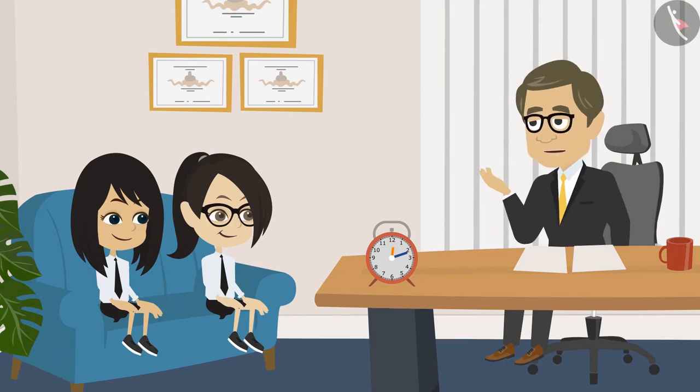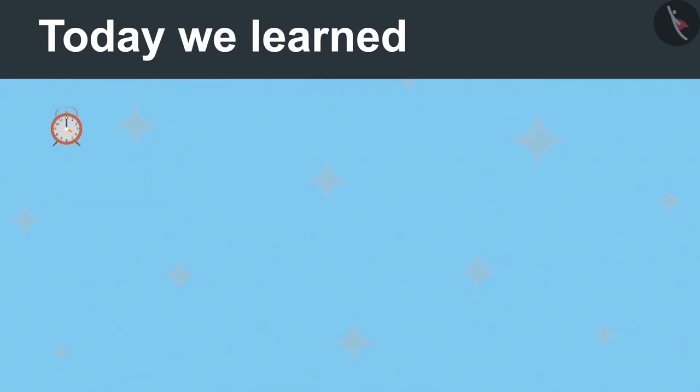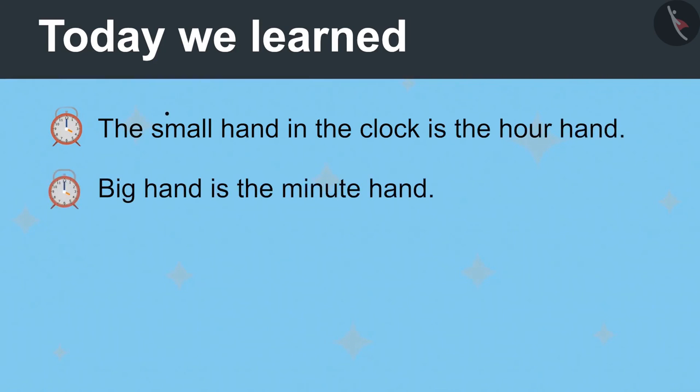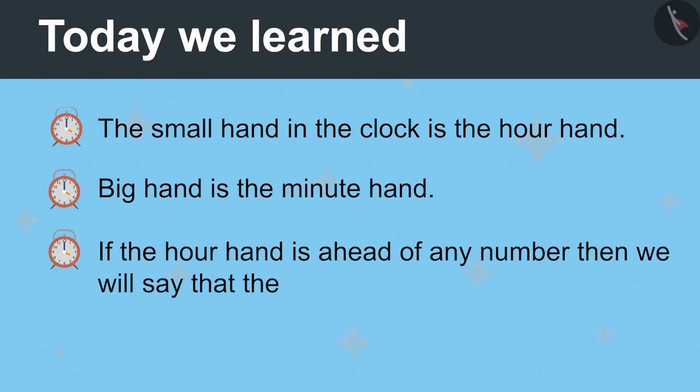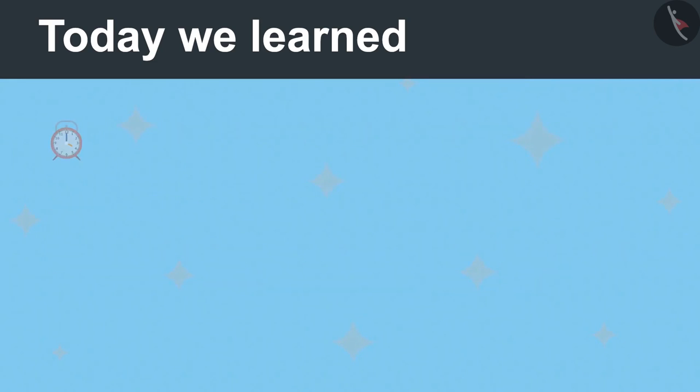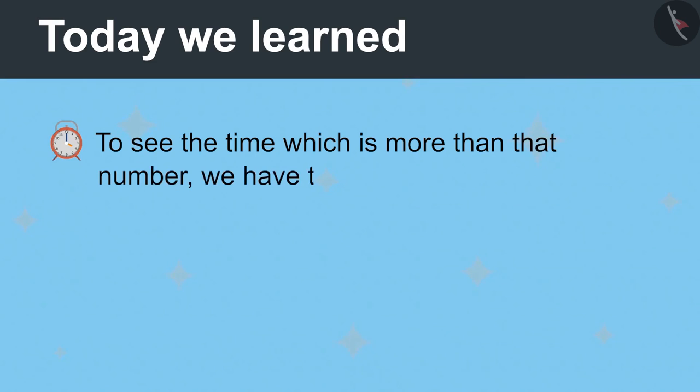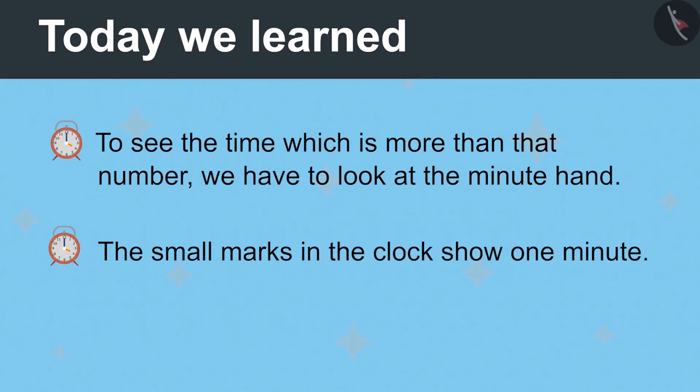Tell me once, what have you learned today? Sir, we learned that the small hand in the clock is the hour hand and the big hand is the minute hand. If the hour hand moves ahead of any number, then we will say that the time is more than that number. And to see the time which is more than that number, we have to look at the minute hand. The small marks in the clock show one minute.